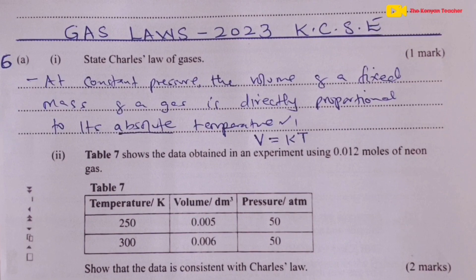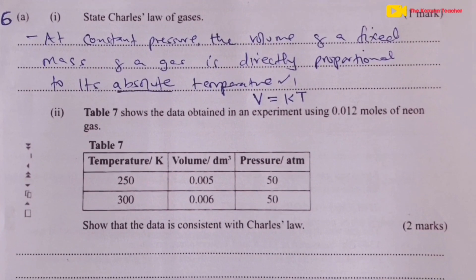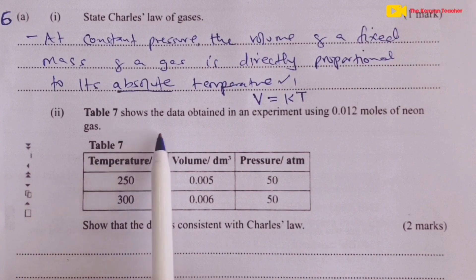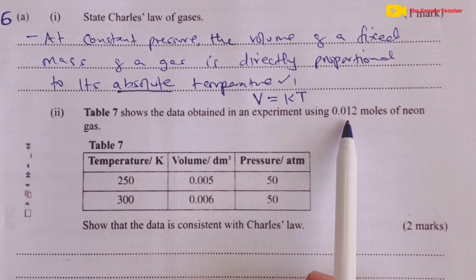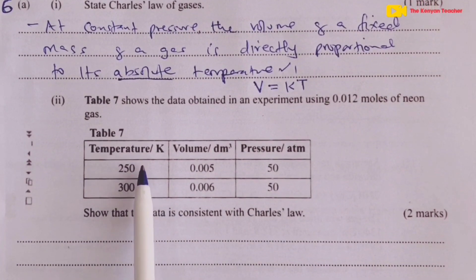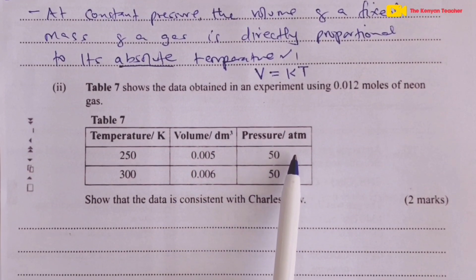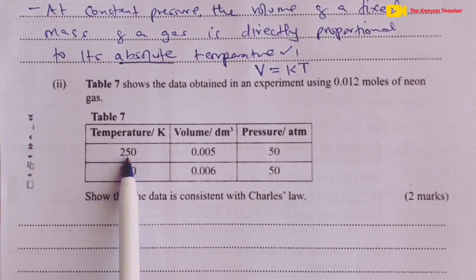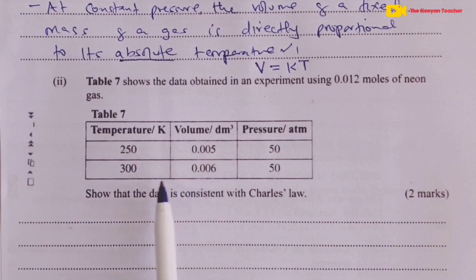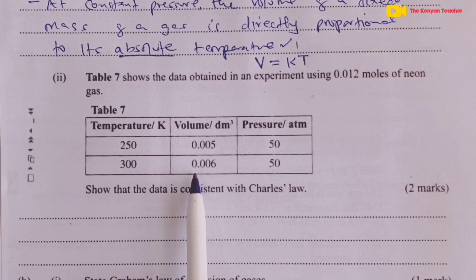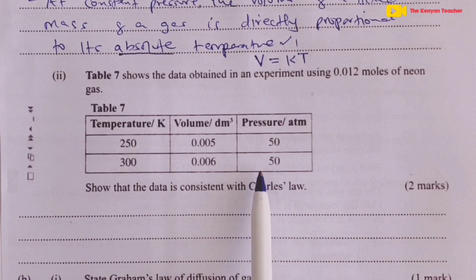Moving on to A Roman 2, we are given Table 7, which shows data obtained in an experiment using 0.012 moles of neon gas. There is temperature in Kelvin, volume in liters, and pressure in atmospheres. When temperature is 250 K, volume is 0.005 L; when temperature is 300 K, volume is 0.006 L. Pressure is constant.